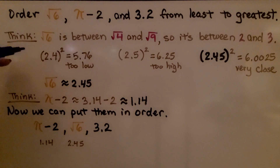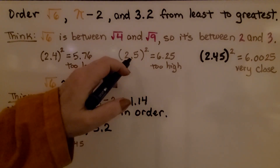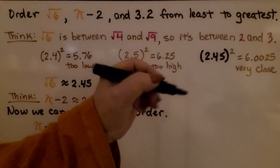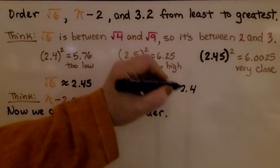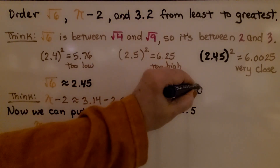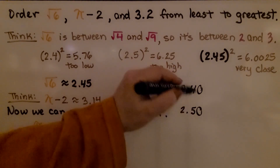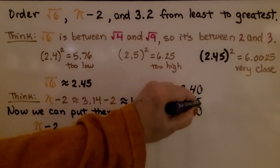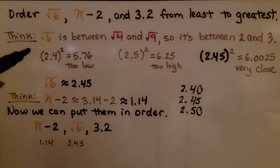We found that 2.4 was too low and 2.5 was too high. So we look at it as: we had 2.4, which was too low, and 2.5, which was too high. If we put a zero in the hundredths place, between 40 and 50 would be 45. That's how I got 2.45 — I went between the one that was too low and the one that was too high.